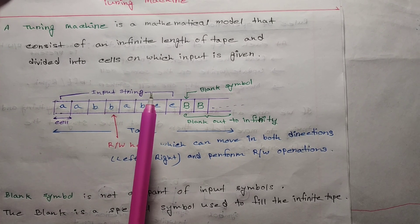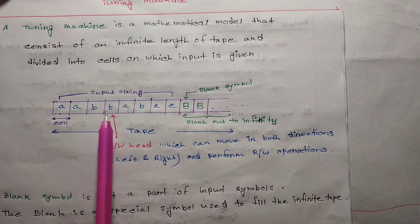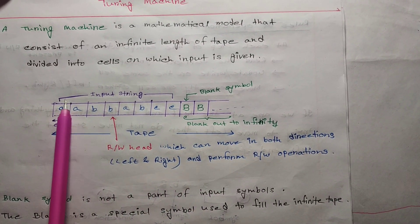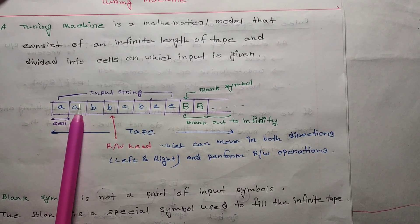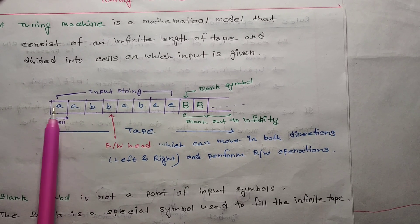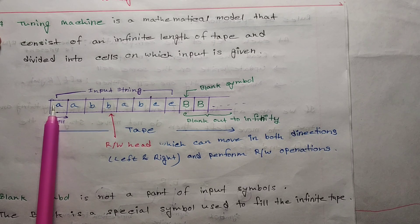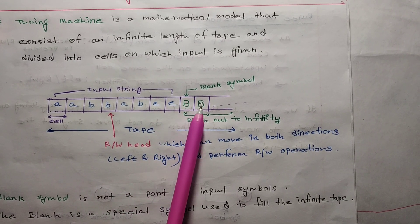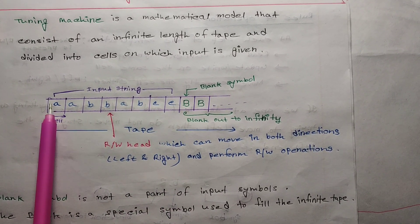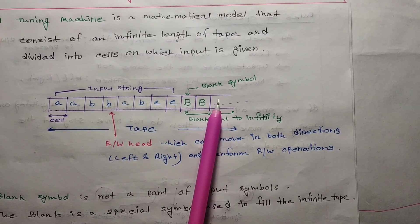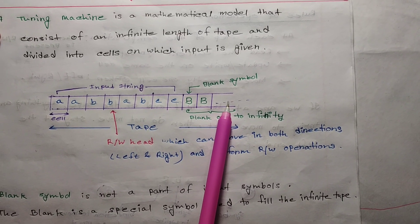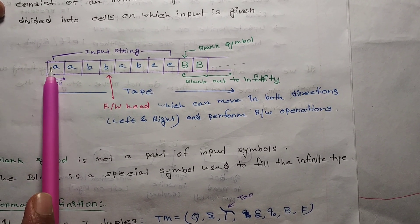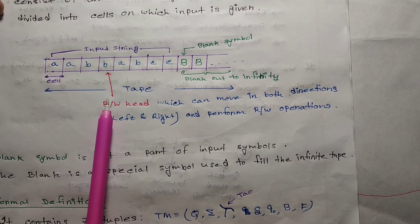A Turing machine has a tape. For example, this tape has symbols like A, B, C. The blank symbol is a special symbol used to fill the infinite tape.